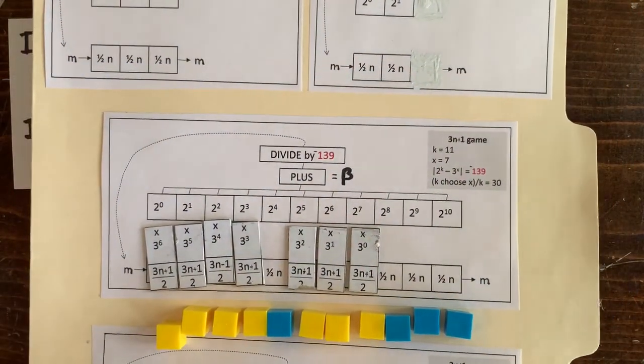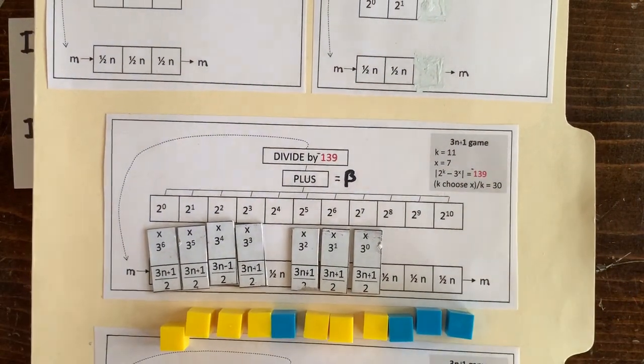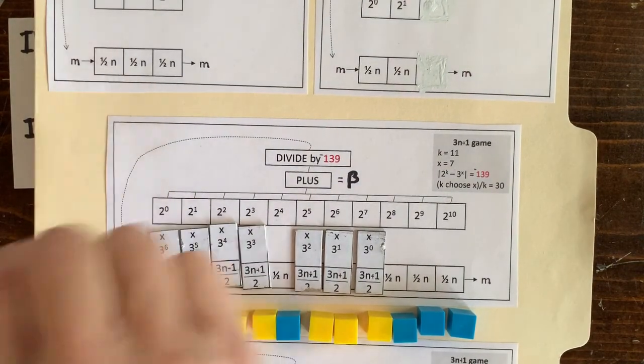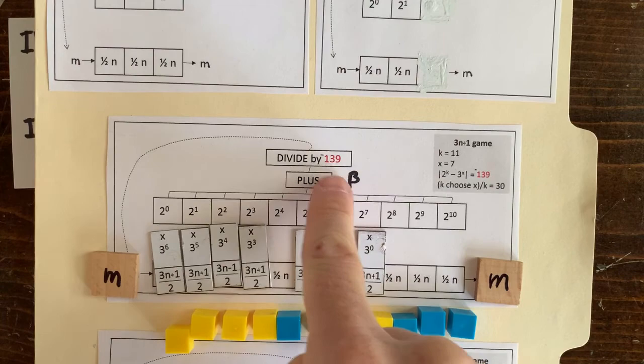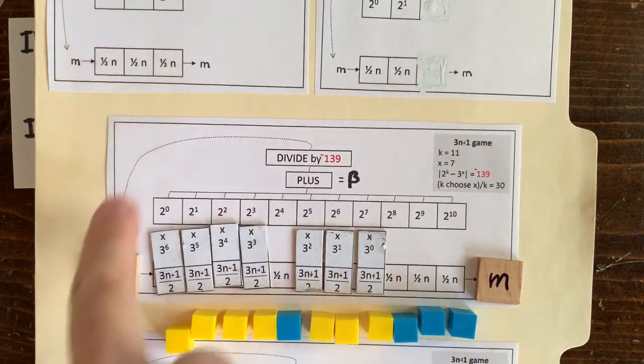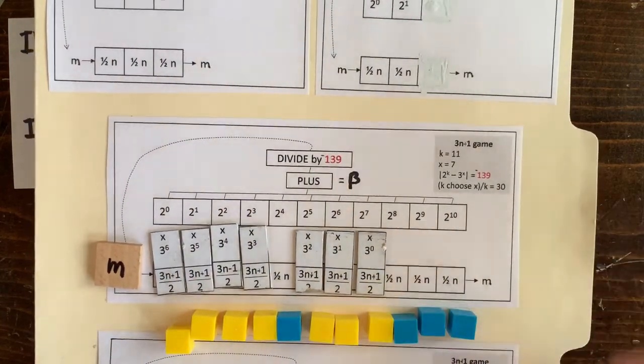For any loop length k and number of 3n plus 1 operations x, we can solve for m. We sum up powers of 2 and 3 to get beta, and then we divide that by 2 to the k minus 3 to the x, and check if m is an integer. Okay, so now we're all caught up.